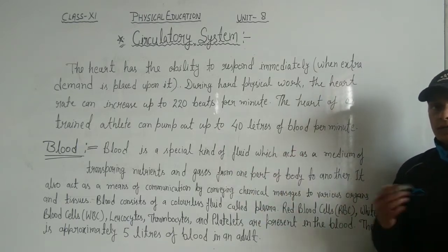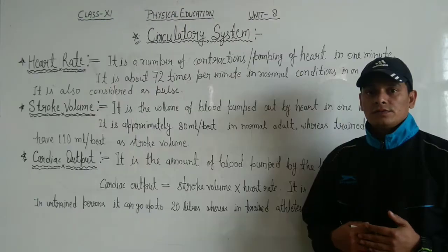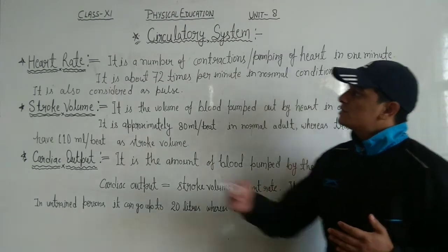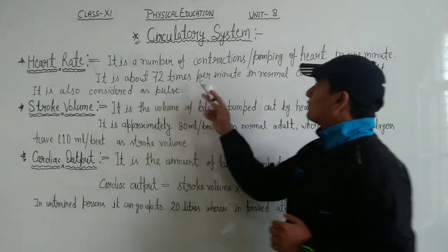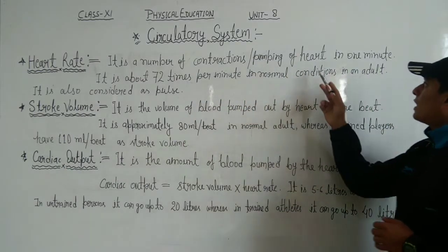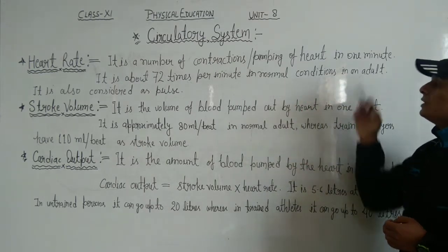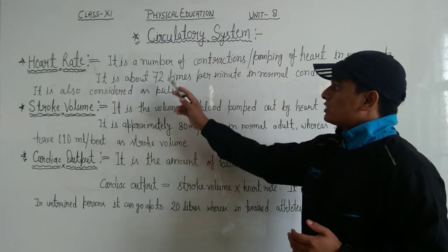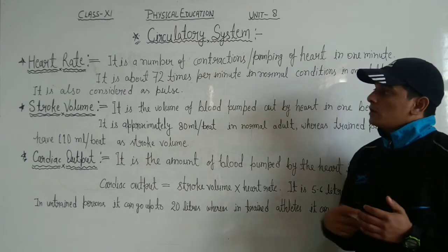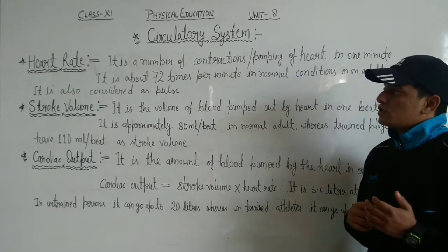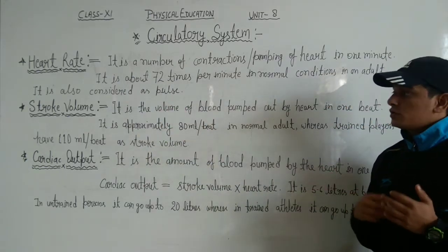Now let's talk about some terms related to the circulatory system. The first term is heart rate. Heart rate is the number of contractions or pumpings of the heart in one minute. It is about 72 times per minute under normal conditions in an adult. Heart rate is also considered as pulse.